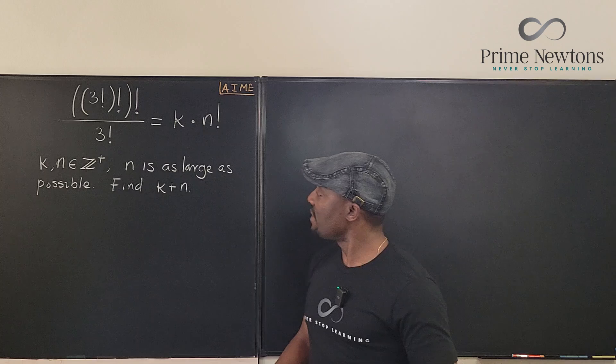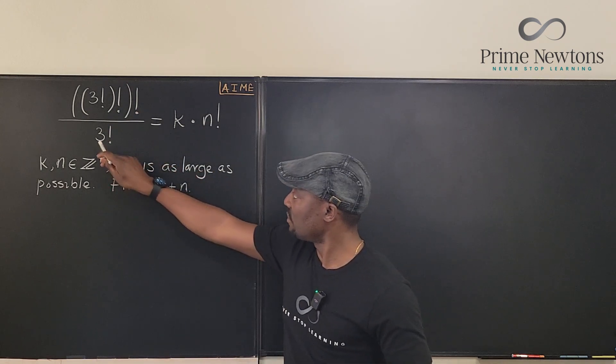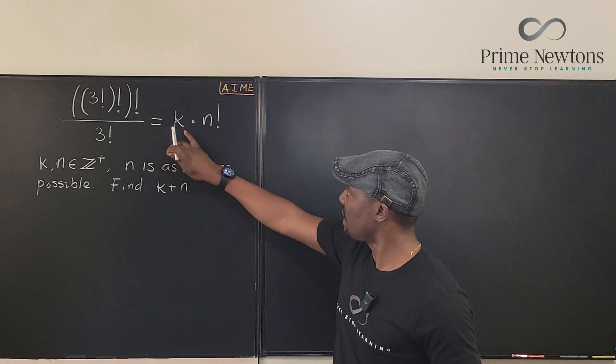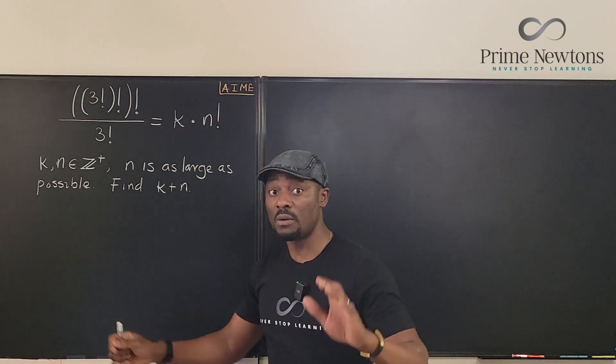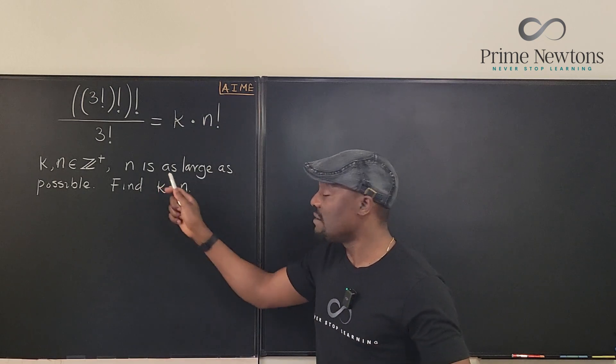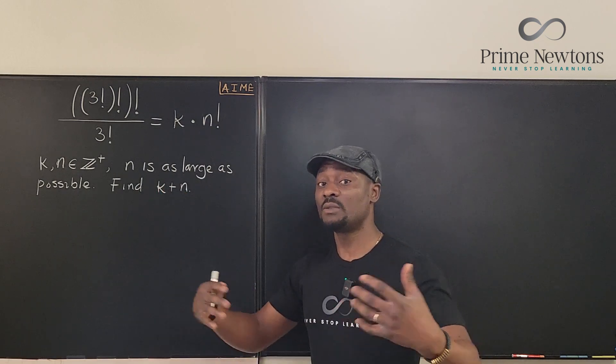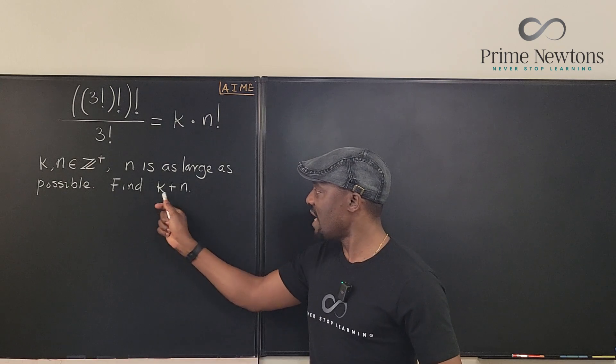So what we have is we have 3 factorial factorial factorial divided by 3 factorial is equal to k times n factorial, where k and n are positive integers and there's something special about n. n is as large as possible. We're supposed to find k plus n.